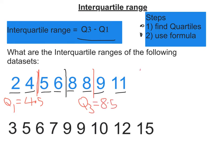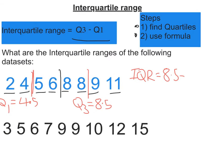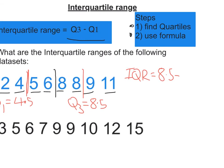So the interquartile range, which I'm just going to simplify to IQR, is going to be 8.5, take away 4.5, and do the subtraction, and we're going to get the answer is 4. So the interquartile range is 4.